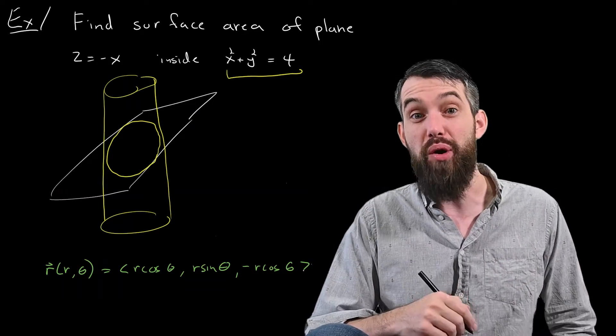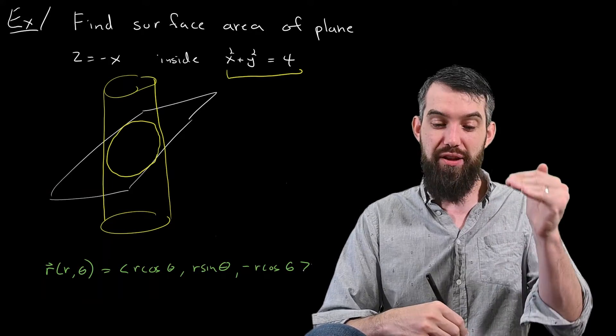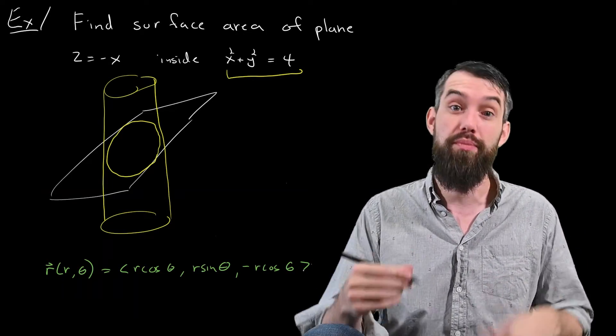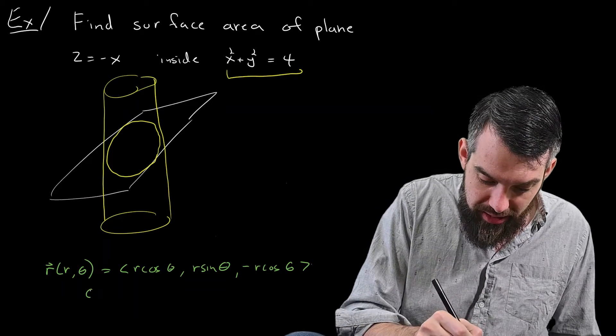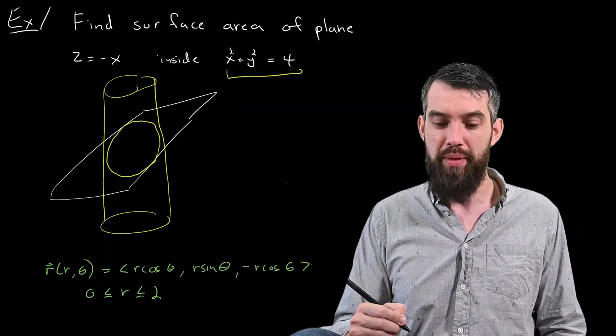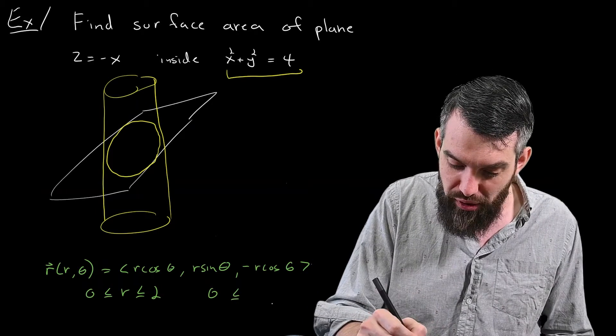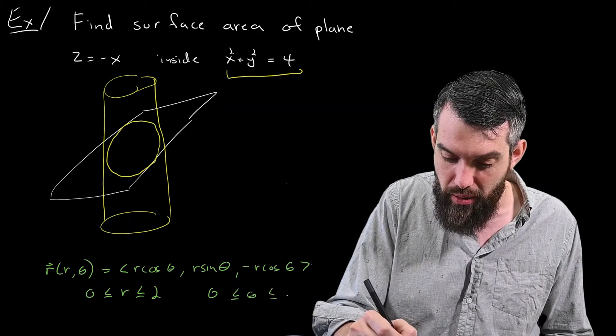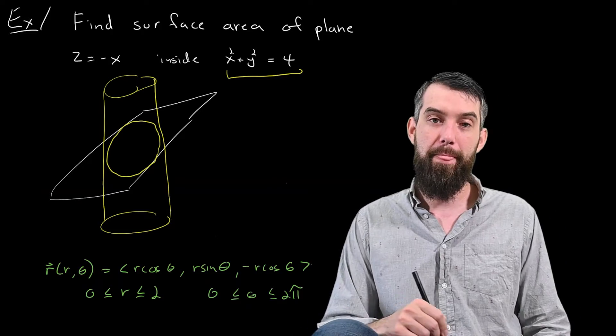And the really nice thing is, I know what my constraints are on my r values and on my theta values. Because it's the cylinder of radius 2, 4 is 2 squared, this means that for my r values, it's going between 0 and 2. And that for my theta values, it's one full circle, so theta is between 0 and 2π.